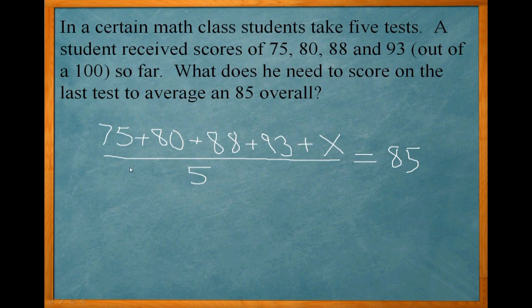So our first step is to add up all the numbers on top of the fraction here. 75 plus 80, plus 88, plus 93. That adds up to 336.